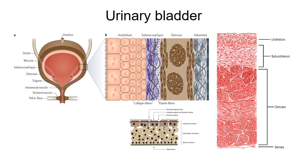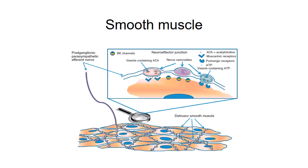Looking at the wall of the urinary bladder, there are four layers. The innermost layer is the urothelium or mucosa, which contains basal cells, intermediate cells, and umbrella cells. The second layer is the submucosa, which contains fiber-shaped collagen — types one, three, and four. The third layer is the muscle layer or detrusor, which constitutes 60 to 70 percent of the total wall and contains circular and longitudinal muscle layers.